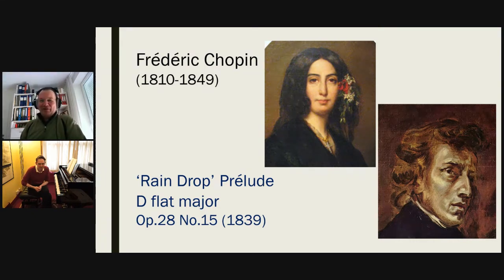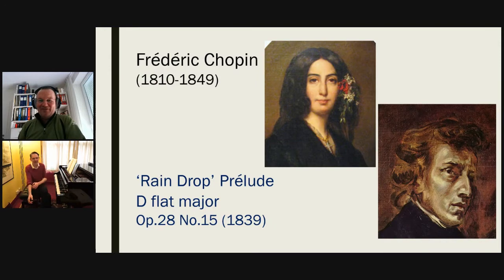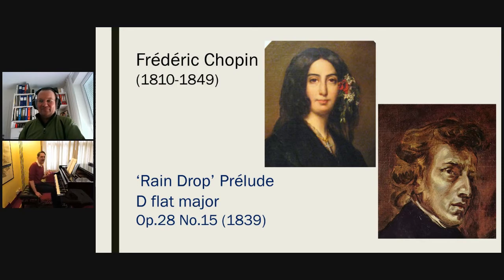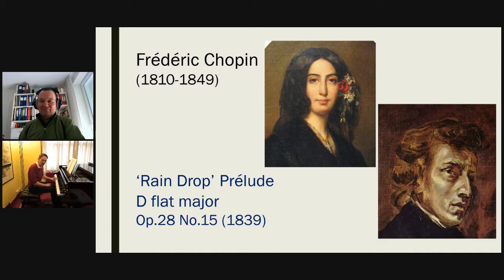So if it wasn't just about rain — George Sand was in the rain and he was in the house — what was in his thoughts when he composed this piece? As I said, he was recovering from a near-death experience, and the piece that did inspire him is closely connected to death in the Romantic imagination: the first movement of the Moonlight Sonata, with its repeated note. In Beethoven's case it's a G-sharp, but in Chopin's it's an A-flat — the same note. That is what George Sand heard as the raindrops.